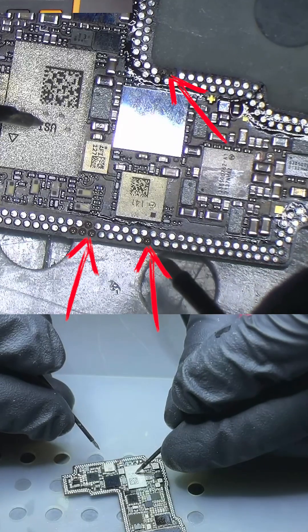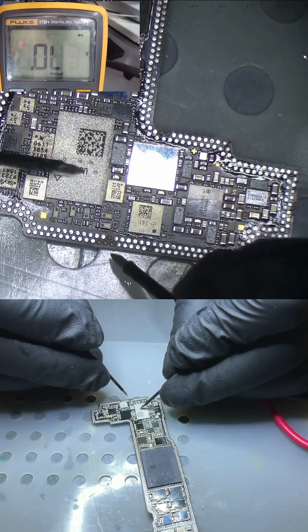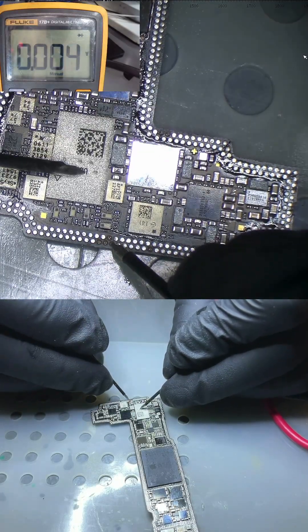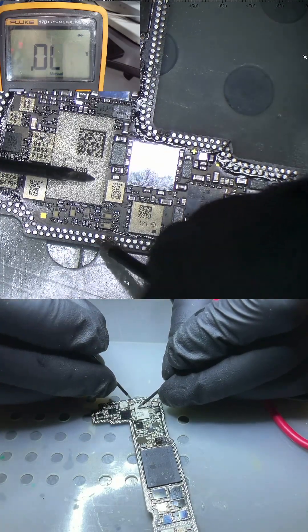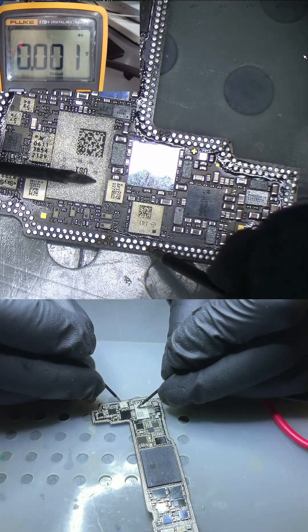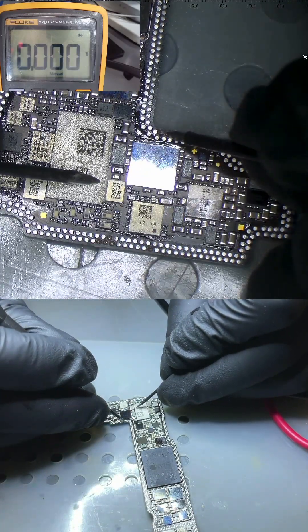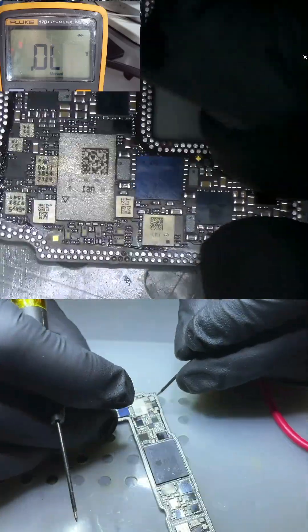Here we notice there are missing traces. We check with the multimeter on diode mode if these are ground. If the traces are ground, we do not have to recreate them. However, if we get an OL reading or another number, then we know we have to run jumpers. In this case, the missing traces are ground.